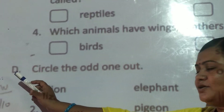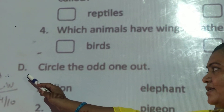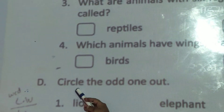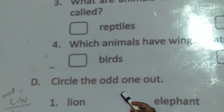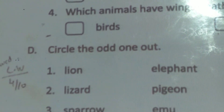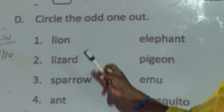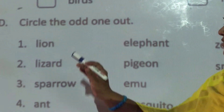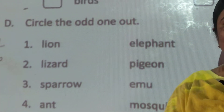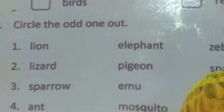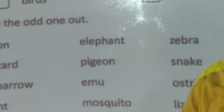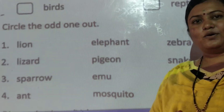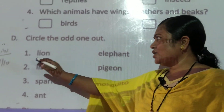Today's question is: circle the odd one out. Circle the odd one out means, find the word that does not belong — circle the one that is different from the others.